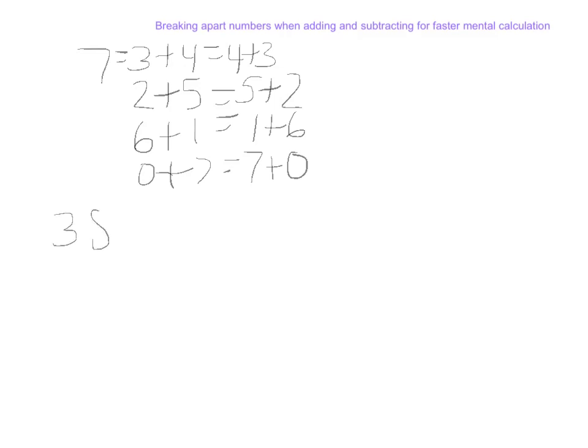If we had the number 38 and we wanted to add 7 to it, students should mentally see right away that in order for 38 to get to the next multiple of 10, I would need 2. So I'd want to use the number combination 2 and 5.